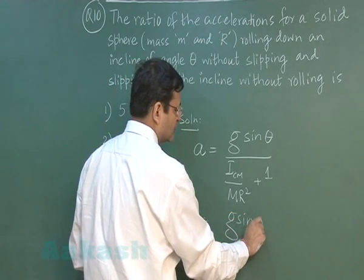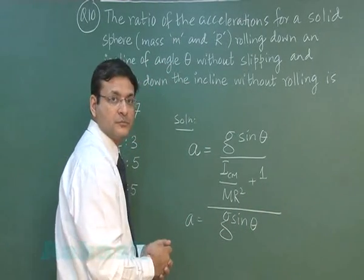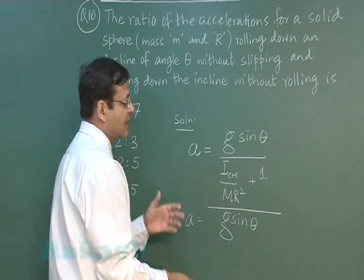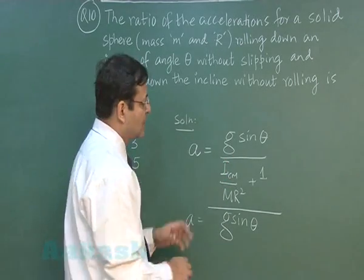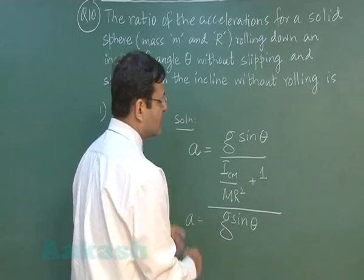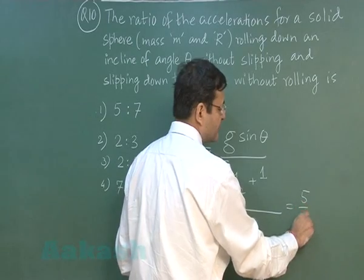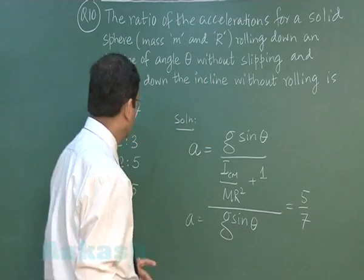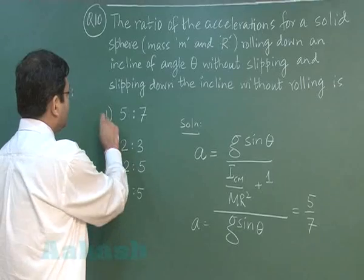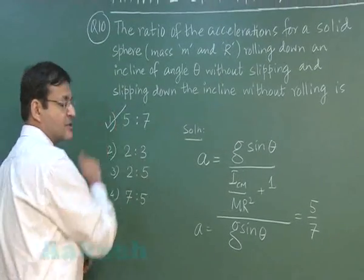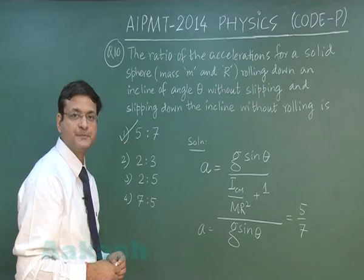We calculate the ratio of the two accelerations. The moment of inertia ICM for a solid sphere is 2/5 mr squared. Substituting this, the ratio of rolling acceleration to slipping acceleration comes out to be 5 is to 7, making the correct option the first one.